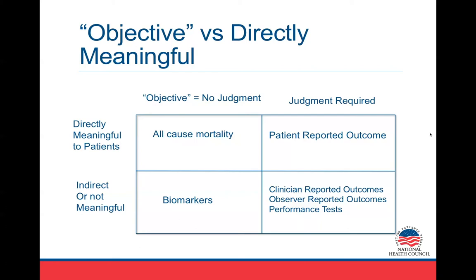Looking at this slide: on the far right, patient-reported outcomes, clinician-reported, observer, and performance tests all require judgment. So if you're worried about potential bias because of judgment, we don't escape that by using a clinician-reported outcome. On the left side, we must look at what is directly meaningful to patients. A patient-reported outcome is directly meaningful even though it requires judgment. There's only one outcome requiring no judgment that's also directly meaningful — all-cause mortality. But for diseases that aren't fatal, like urinary tract infections in otherwise healthy women where the death rate is essentially zero, you need something else directly meaningful to the patient. A laboratory test may require no judgment but mean nothing to a patient — my mom has a white blood cell count that's always low, outside the normal range but normal for her.